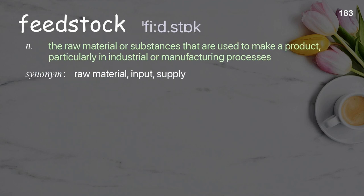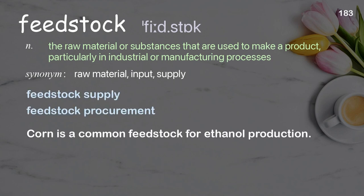Feedstock: the raw material or substances that are used to make a product, particularly in industrial or manufacturing processes. Examples: feedstock supply; feedstock procurement. Corn is a common feedstock for ethanol production.